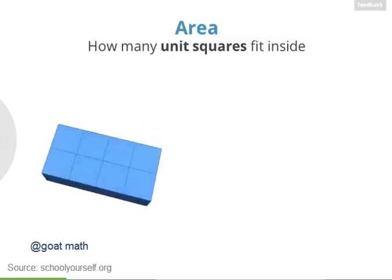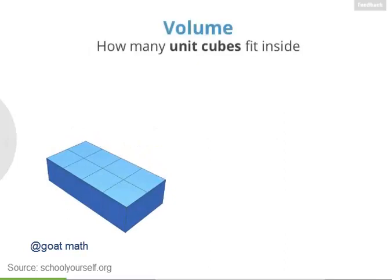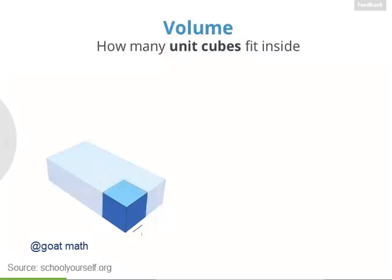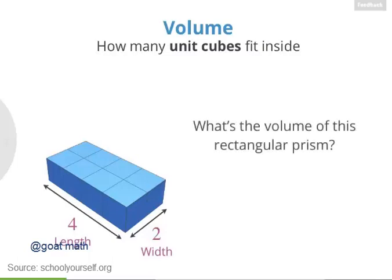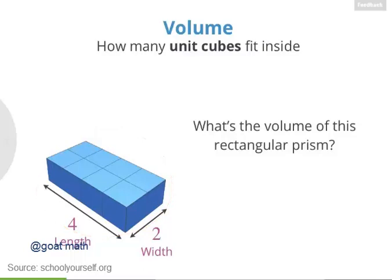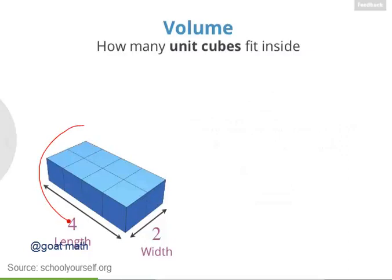Next, let's look at a rectangular prism. The volume of a solid is the number of unit cubes that fit inside. Here's an example of a unit cube — it's a cube whose side length is 1. So for this rectangular prism with length 4 and width 2, there are 8 unit cubes here, so the volume of this prism is 8.